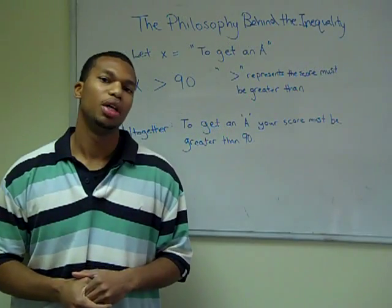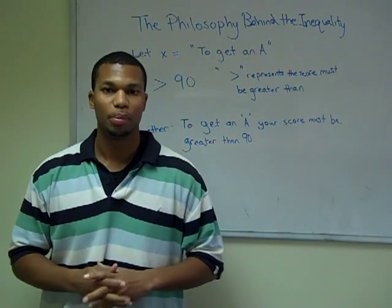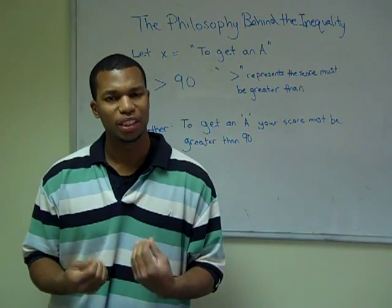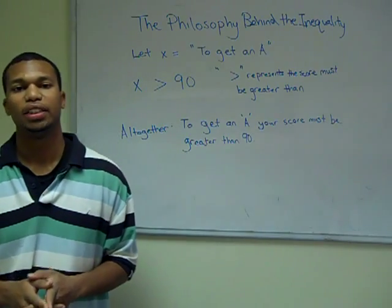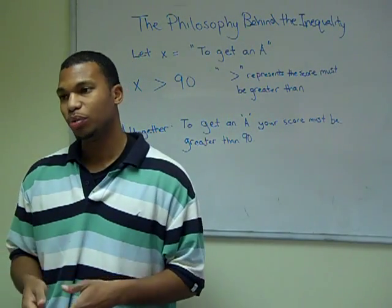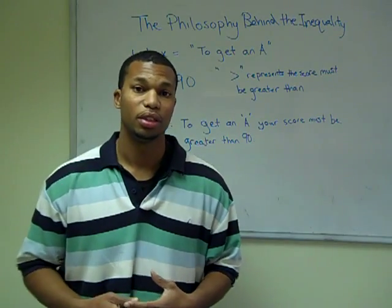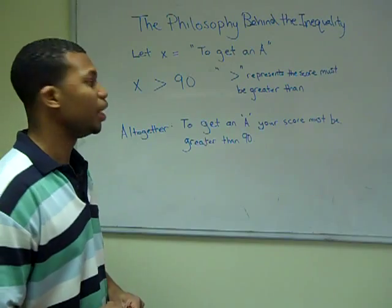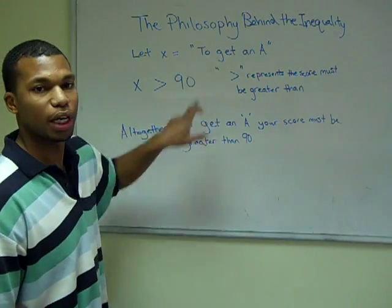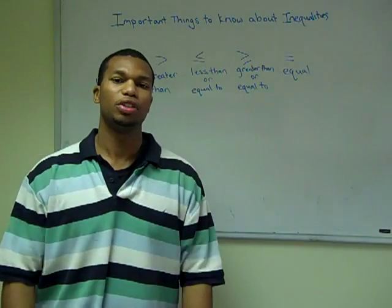Let's take a moment to understand the philosophy behind the inequality. In an equation we have one solution, but in an inequality we can have several solutions or a range of solutions. For example, imagine we're in our favorite algebra class and our teacher says that in order to get an A, we have to have higher than 90%. So 91, 92, 93, all the way up to 100 is acceptable. Using an inequality, if we allow X to represent the score, our inequality would be X is greater than 90 — meaning your score must be greater than 90.